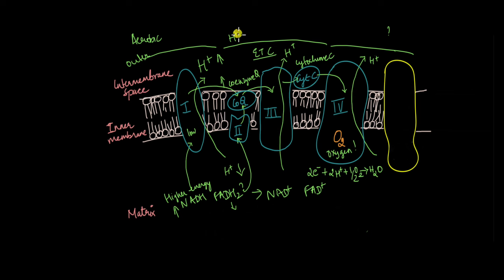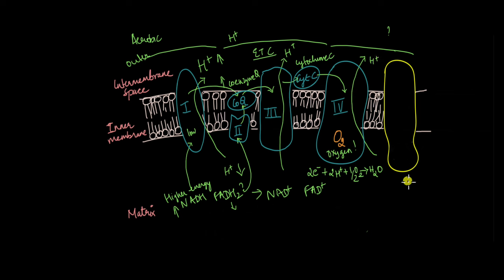Now the intermembrane space has a lot of hydrogen ions compared to the matrix, and these hydrogen ions need to find a way to come back to the matrix so that their equilibrium concentration can be maintained. The protein complexes 1, 2, 3, and 4 are capable of only unidirectional proton transport — they can transport protons from the matrix to the intermembrane space against the concentration gradient, but they cannot transport hydrogen ions back down the concentration gradient. So how will these protons come back to the matrix?